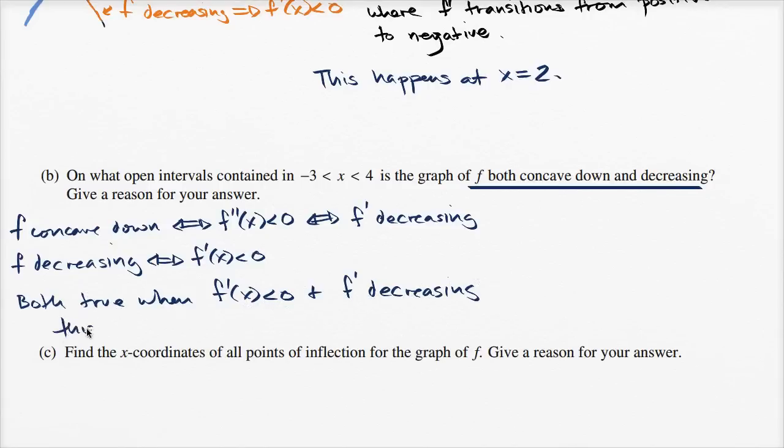So we have both true when these two things are true. And so this happens when negative two is less than x is less than negative one, or one is less than x is less than three. So those are our two open intervals.